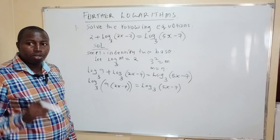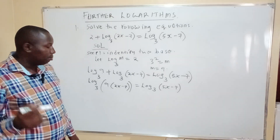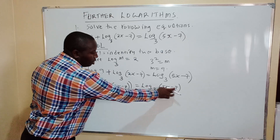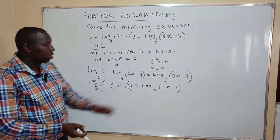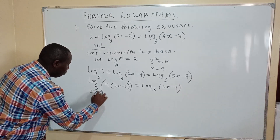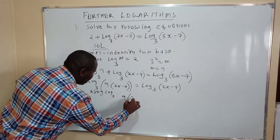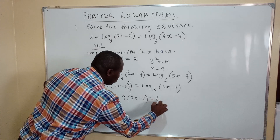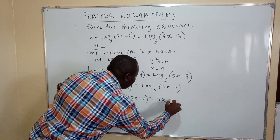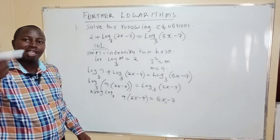Since both sides now have logarithms to the same base 3, the next step is to drop the logarithms. Because the logarithms are equal, the values inside must be equal. So we get: 9 times (2x minus 7) equals 5x minus 7.